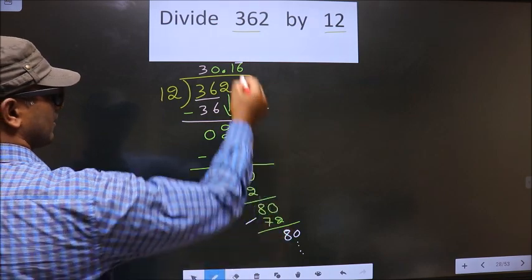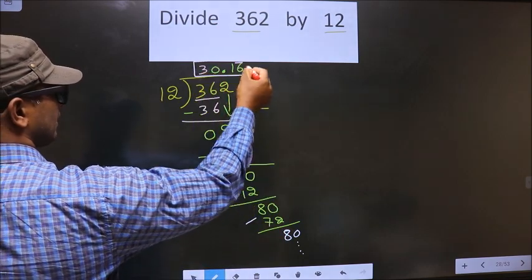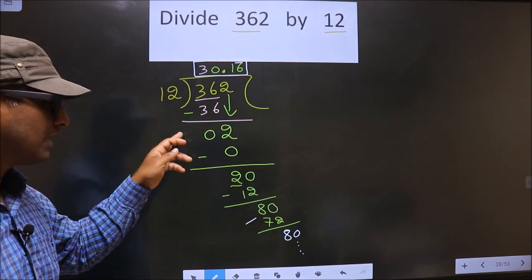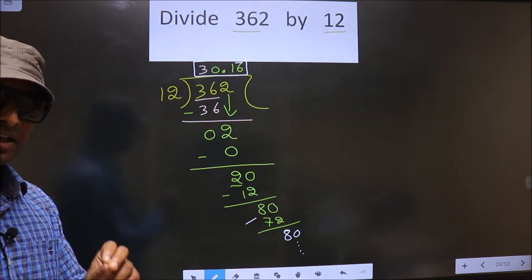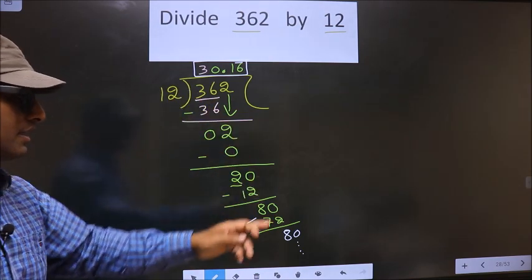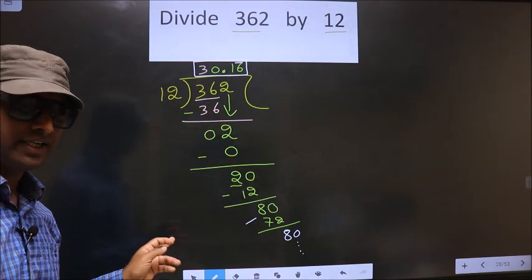So this is our quotient. Did you understand where the mistake happens? You should not do that mistake. Am I clear?